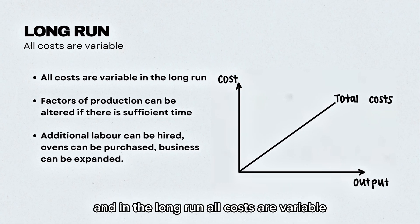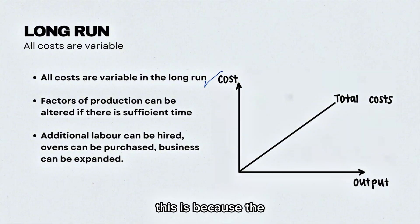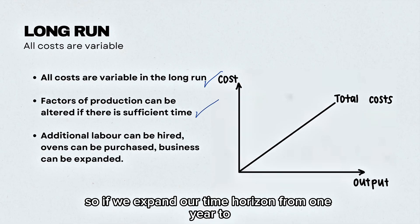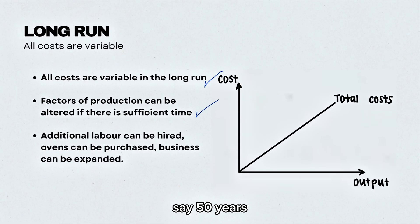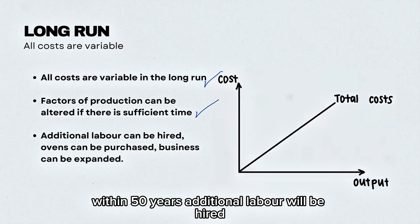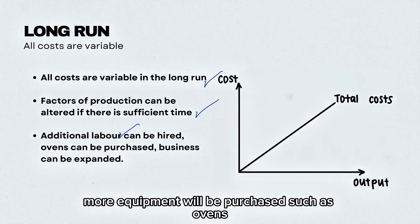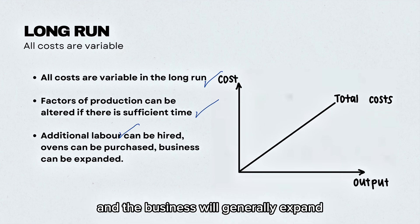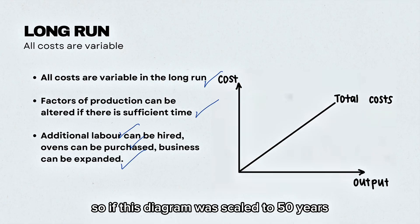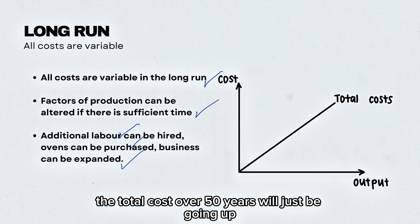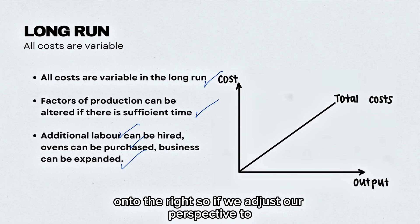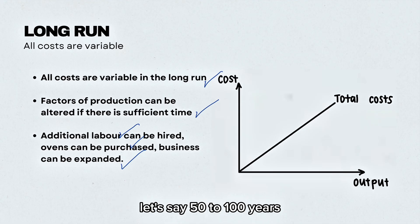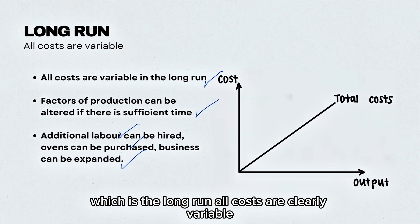In the long run, all costs are variable. This is because the factors of production can be altered if there is sufficient time. If we expand our time horizon from one year to, say, 50 years, additional labor will be hired, more equipment will be purchased such as ovens, and the business will generally expand. If this diagram was scaled to 50 years, the total cost over 50 years will just be going up and to the right. So if we adjust our perspective to 50 to 100 years — the long run — all costs are clearly variable.